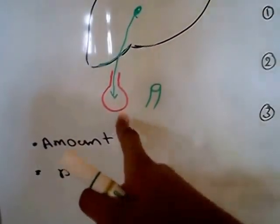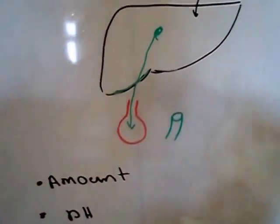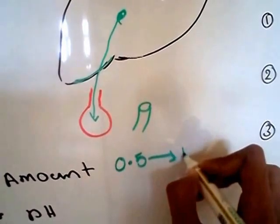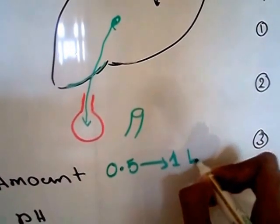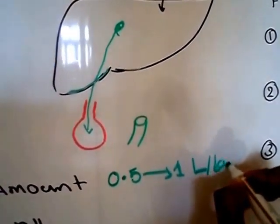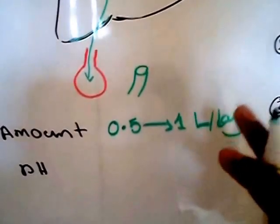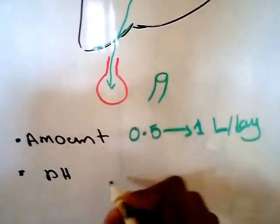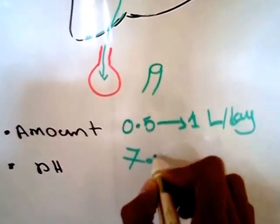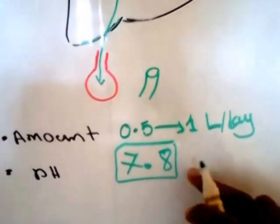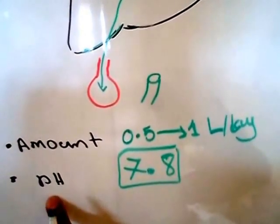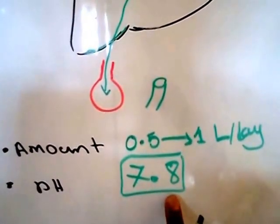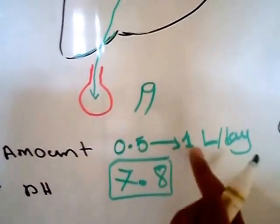I will talk about the amount of bile secreted by the liver. It is about 0.5 to 1 liter per day — so that is the amount of bile produced per day, from half to one liter per day. The pH of this bile is 7.8 in the liver. So the pH of the bile here in the liver is 7.8, and the amount is 0.5 to 1 liter.